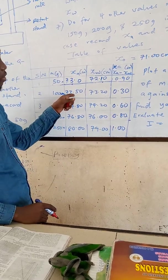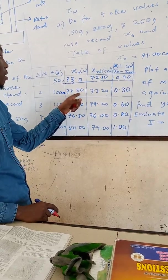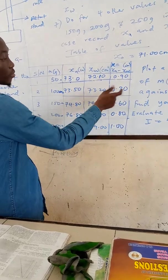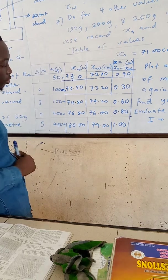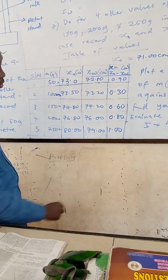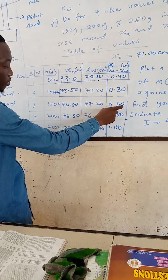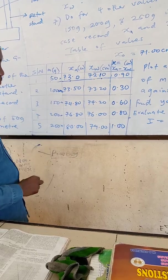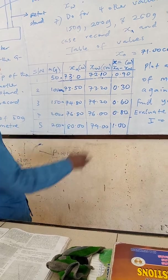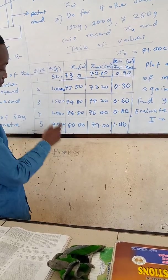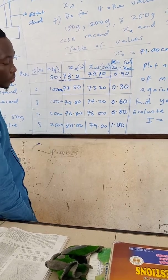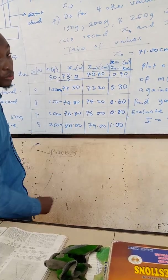The same thing when I have 100 grams. 100 grams will give me 73.5 as the distance in air, then 73.20 as the distance in water. When I subtract, I'll get this. For 150, 74.80 and 74.20. When I subtract, I'll get 0.60. For 200 grams, I'm going to get 76.80, 76.00 and 0.80. For my 250 grams, I'm going to get 80.00 and 79.00. When I minus this, I'm going to get 1.